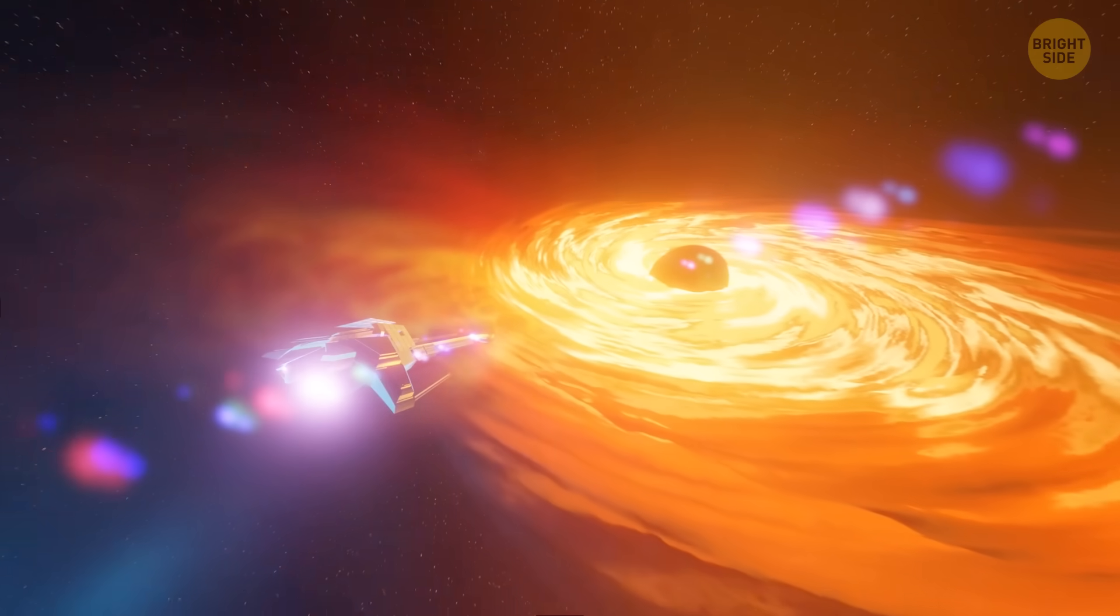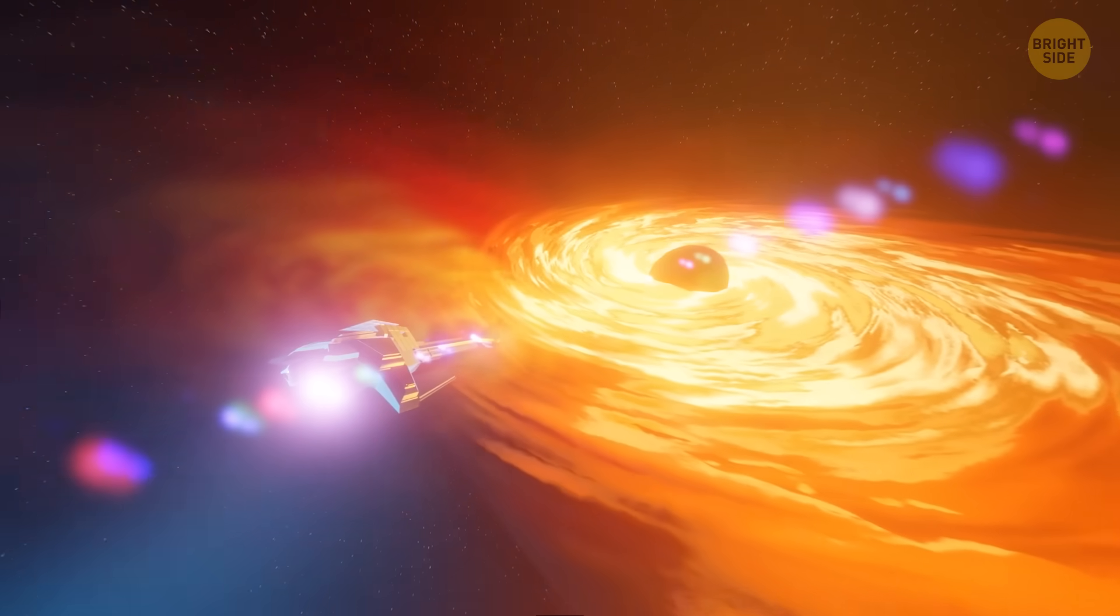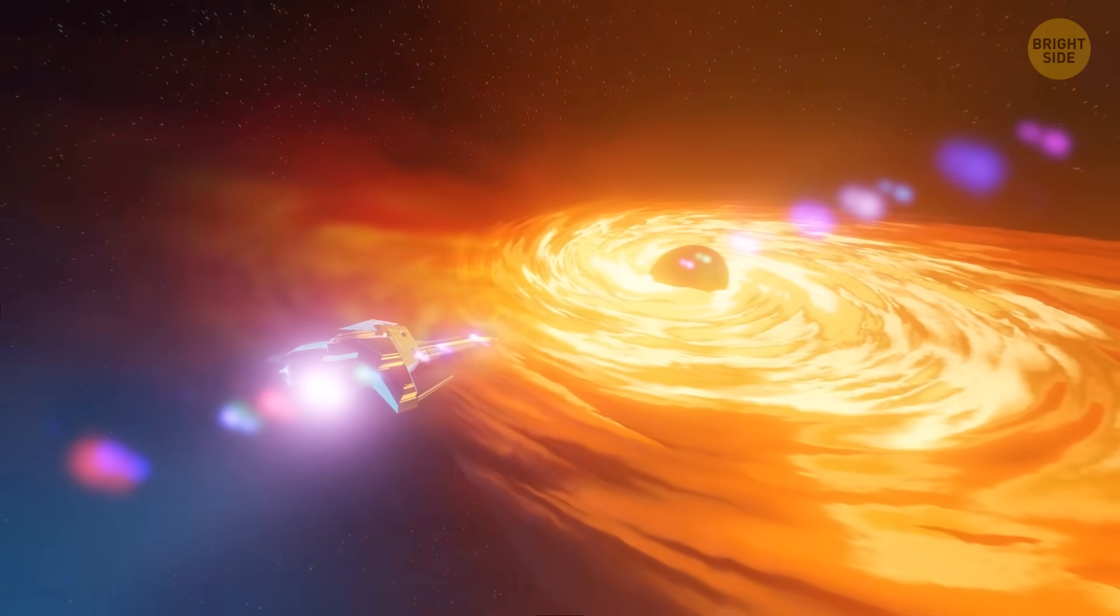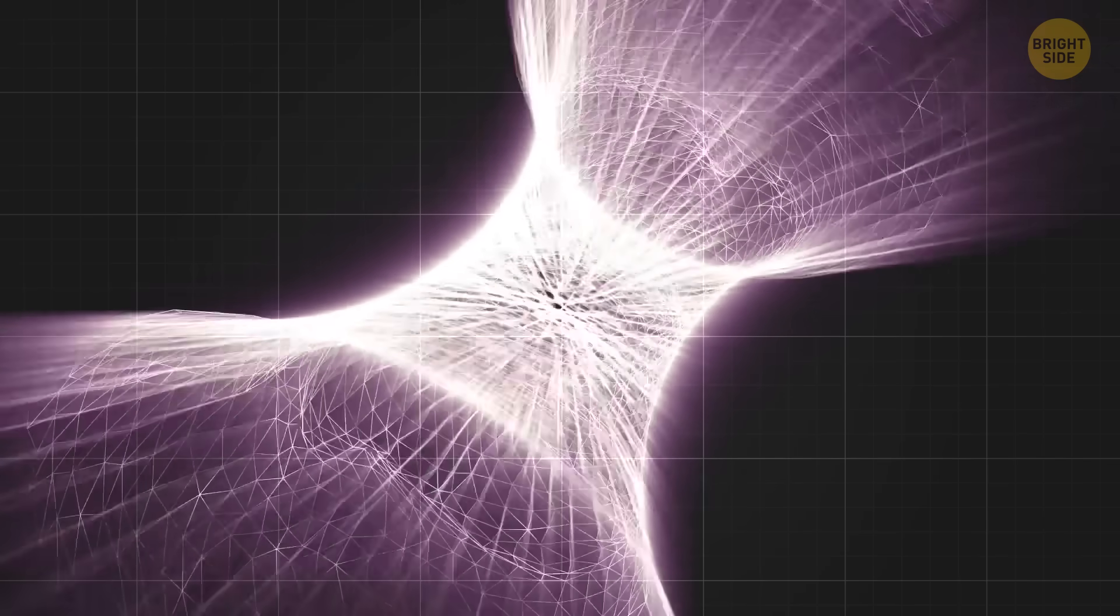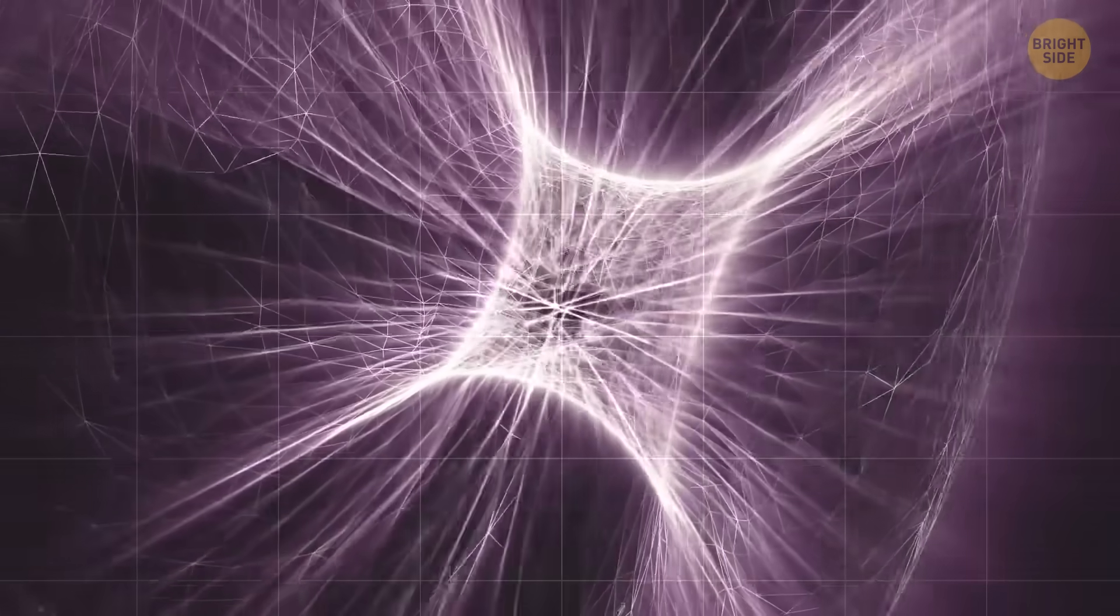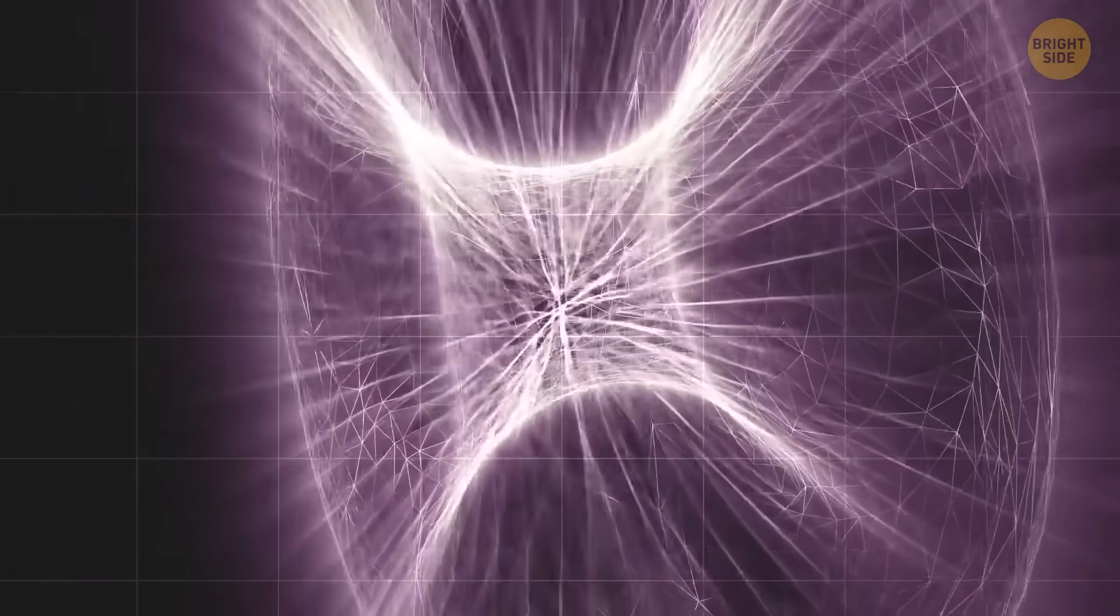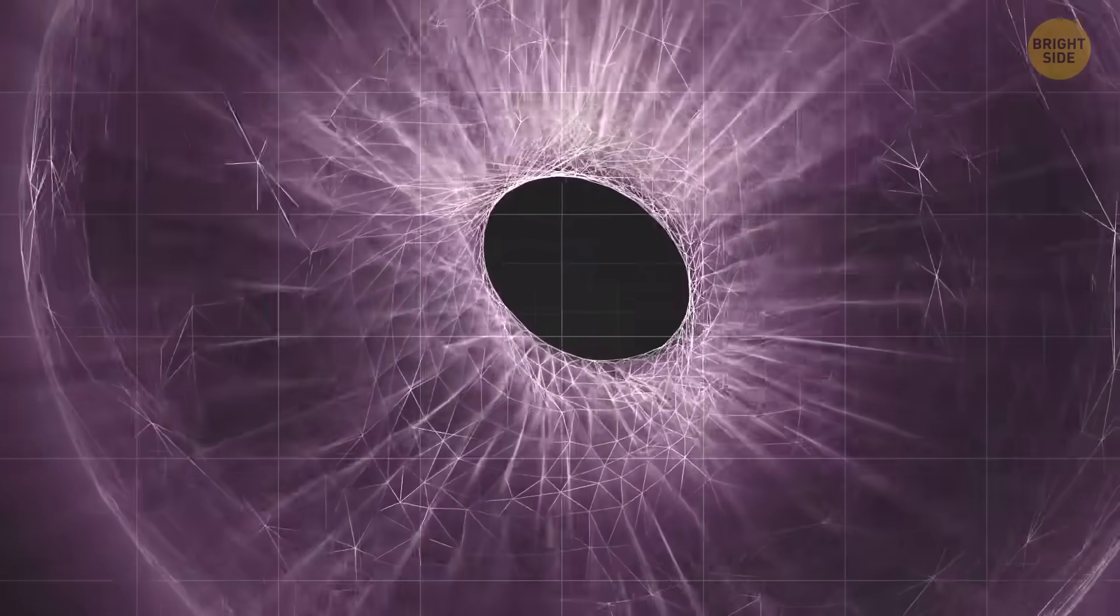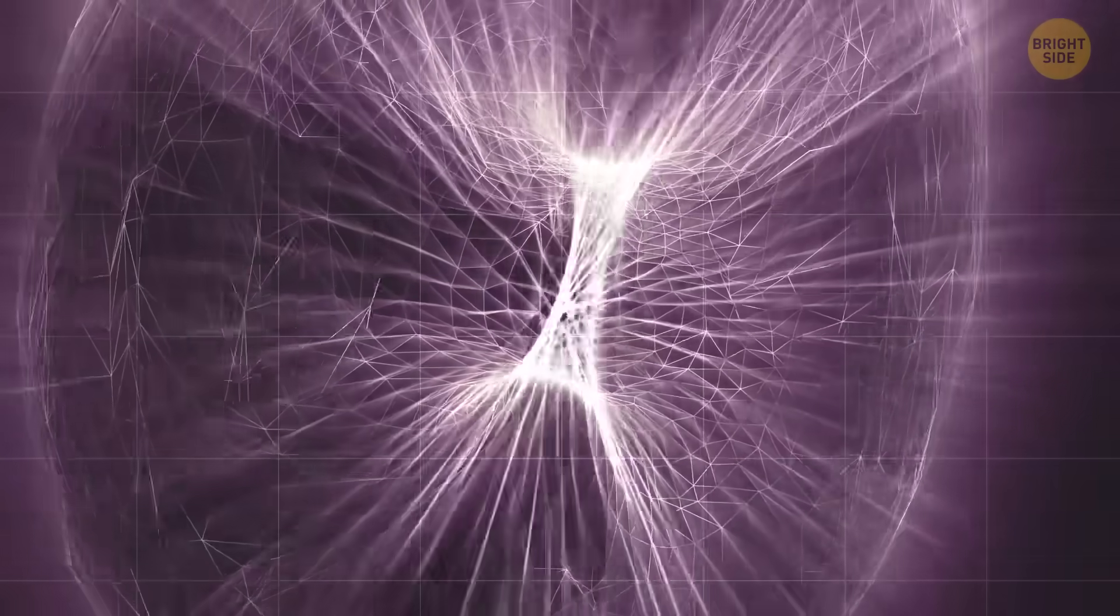In that case, traveling back to the past using a black hole is theoretically possible. If their gravity twists time so much that it wraps back on itself, creating a closed time-like curve, and you could enter this loop, you'd find yourself on a journey from the future to the past.